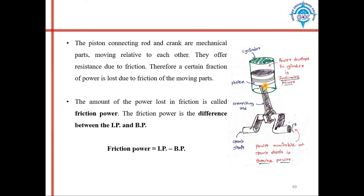Friction is present at the piston-connecting rod pin joint, and also at the connecting rod-crank bearing. The friction power can be found using: friction power equals indicated power minus brake power. Whatever power is available inside the cylinder minus the power available at the crankshaft equals the power lost in between.